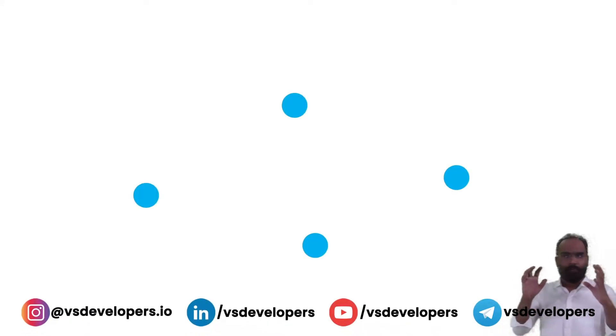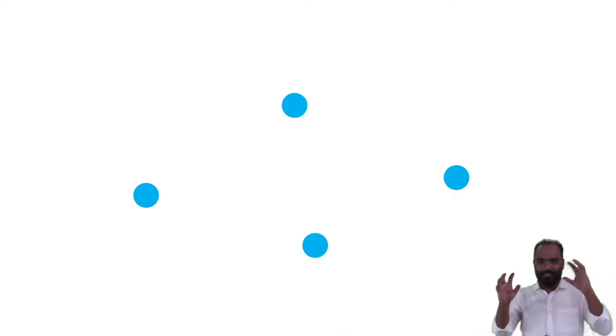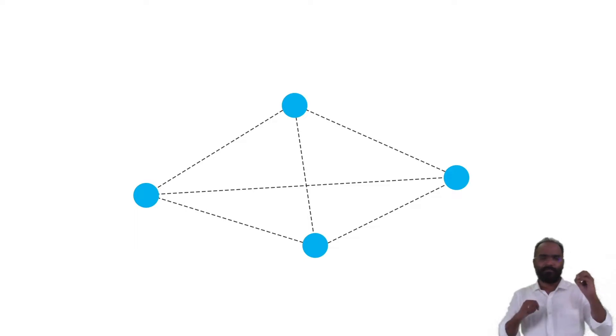Well, let's say four vertices and each vertex has an edge to every other vertex. What is it called?